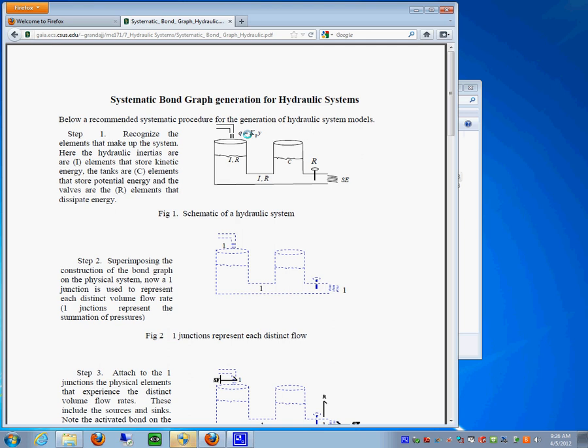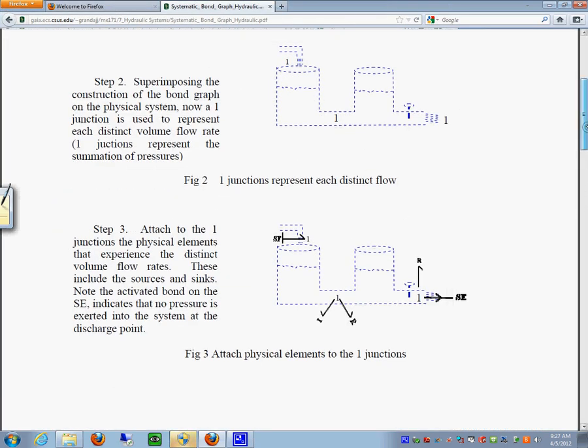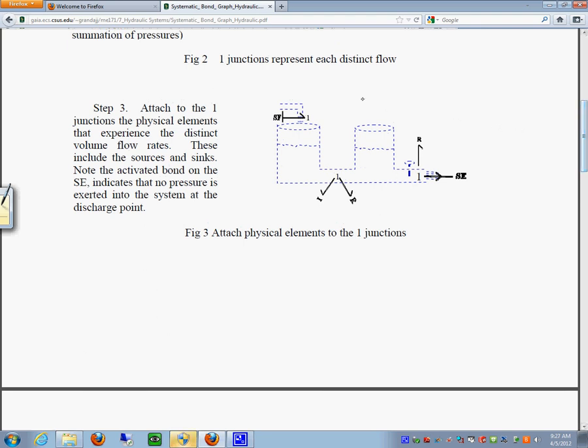So in here we use this to indicate that in the background is the system itself. We put a one junction for each of those, see here one here and here, a one junction for the distinct flows. And once we do that...